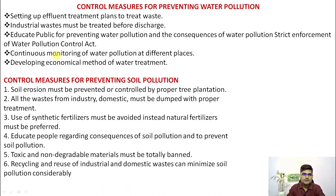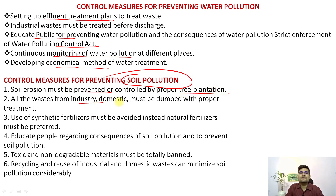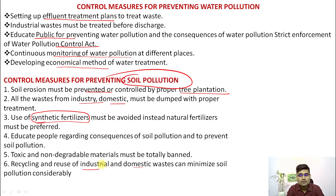Control measures for water pollution include setting up effluent treatment plants, educating the public, strict enforcement of the Water Pollution Act, developing economical water treatment methods, and monitoring water pollution at different places. For soil pollution, prevention involves proper tree plantation, reducing runoff, not dumping industrial or domestic waste without treatment, reducing use of synthetic fertilizers — which are causing salinization and toxic chemical issues in soil — and promoting organic and natural fertilizers. Educating people is also essential. Recycling and reusing industrial products and minimizing domestic waste contribute to sustainable development goals.